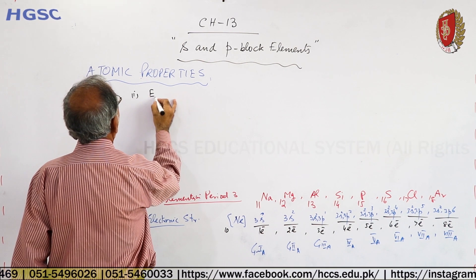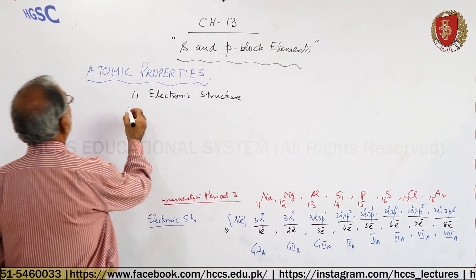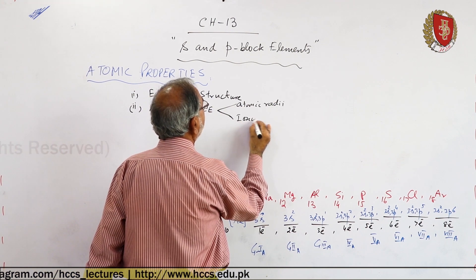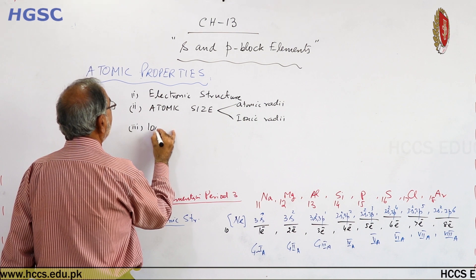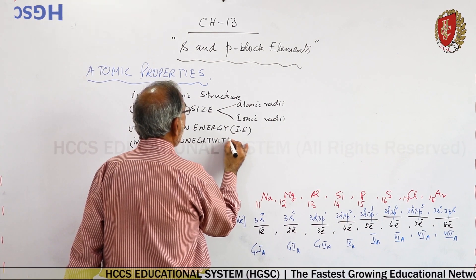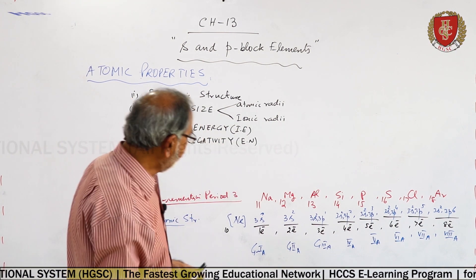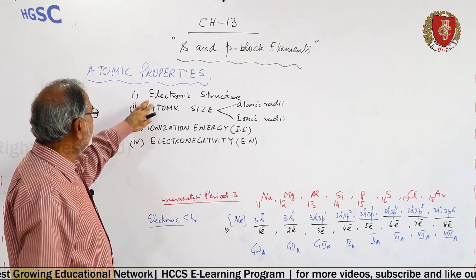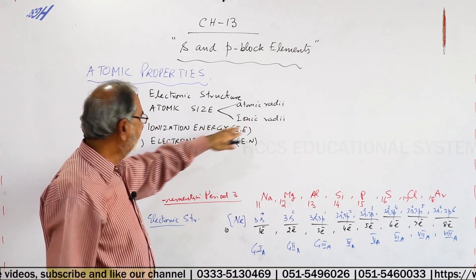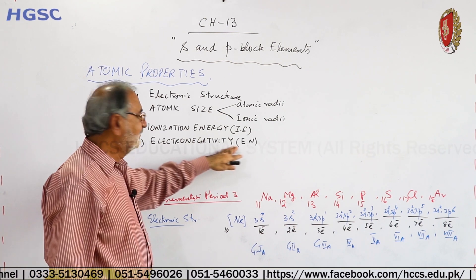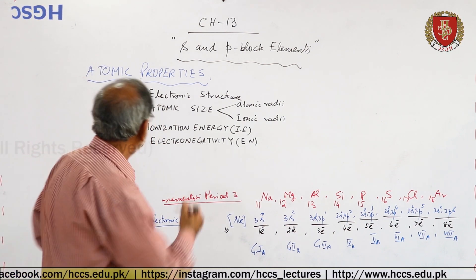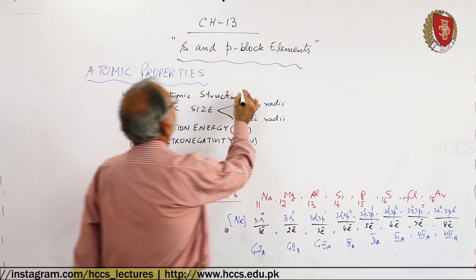The atomic properties of S and P block elements that we will discuss are: number one, electronic structure; number two, atomic size, that is atomic radii and ionic radii; number three, ionization energy; and number four, electronegativity. We will explain all these atomic properties one by one.